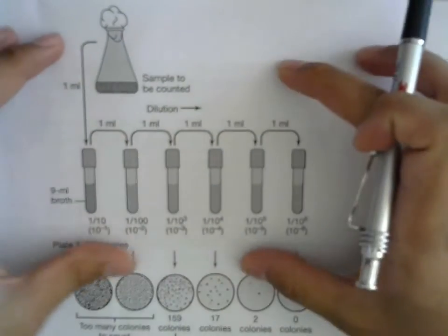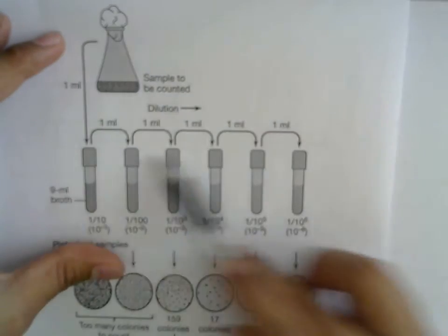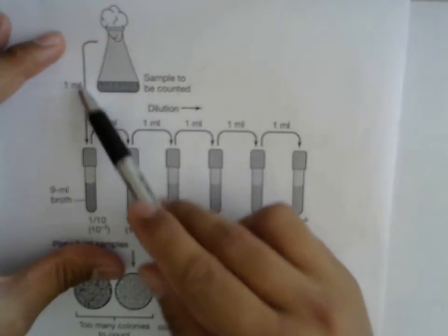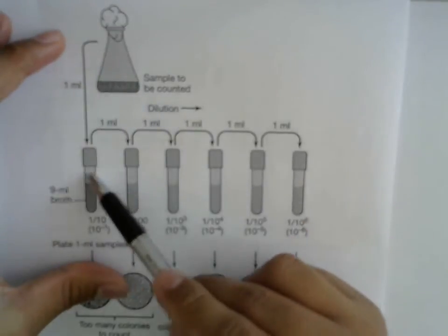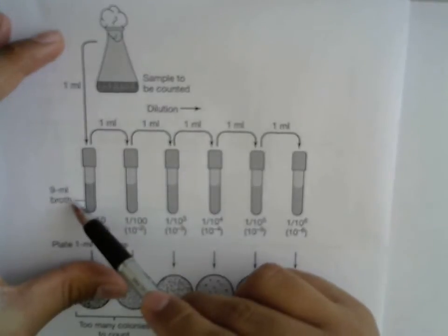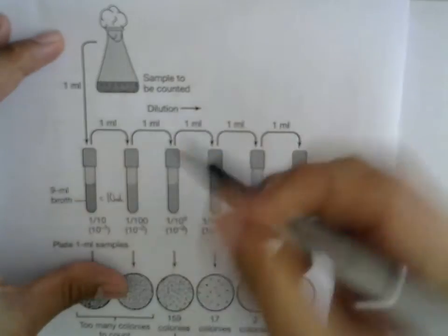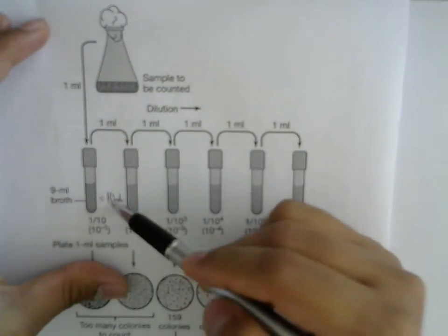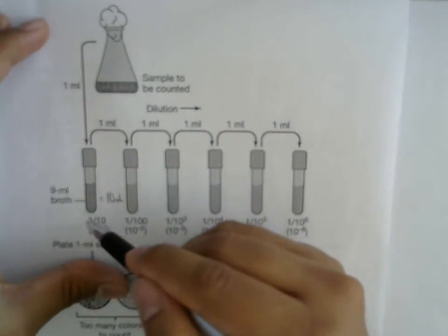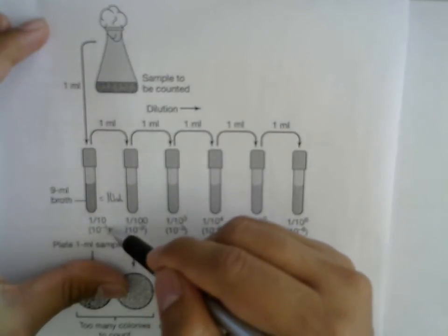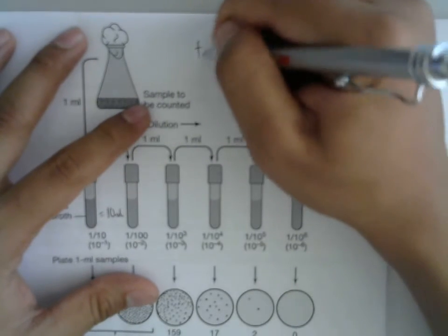But how does the dilution occur? One mL is taken from the original sample into nine mL of a broth, giving a total of ten mL. One plus nine equals ten — that is a tenfold dilution, one over ten.